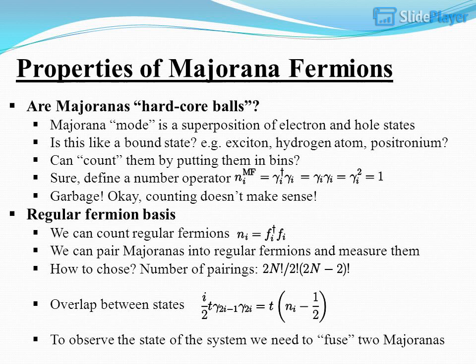Properties of Majorana fermions. Are Majoranas hardcore balls? A Majorana mode is a superposition of electron and hole states. Is this like a bound state — for example an exciton, hydrogen atom, or positronium? Can we count them by putting them in bins? Defining a number operator leads to garbage — counting doesn't make sense for Majorana fermions.